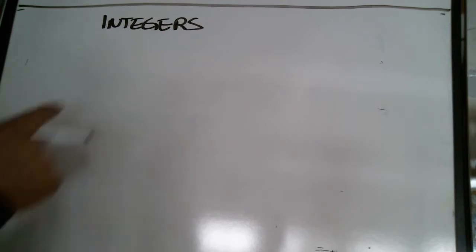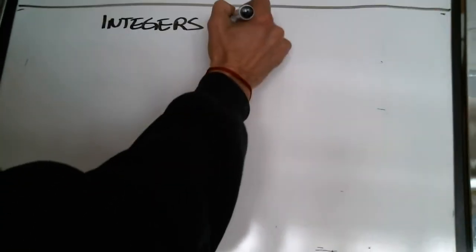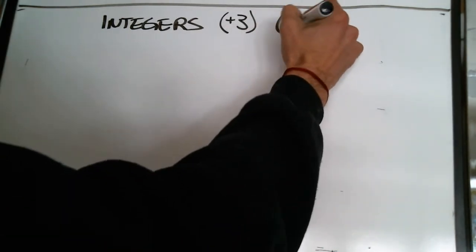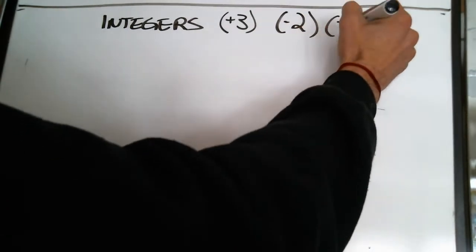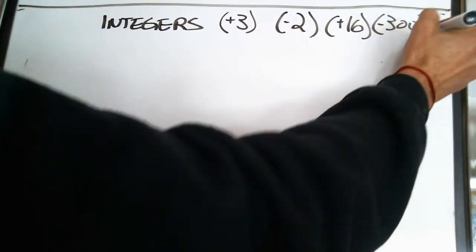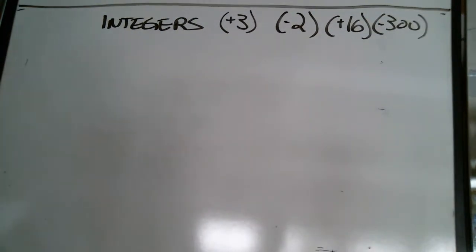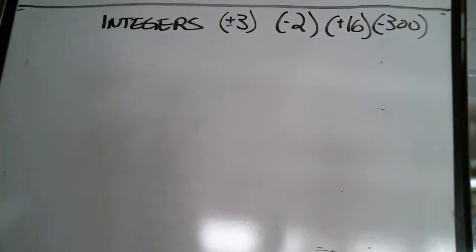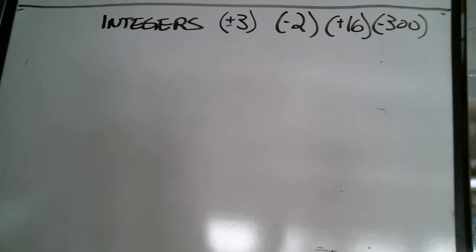Now we're getting into integers. Integers look like this: positive three, negative two, positive sixteen, negative three hundred. Notice how they have two components. The first component is a sign. You'll also notice that when I do integers I'll put brackets around them — that's standard Canadian convention.